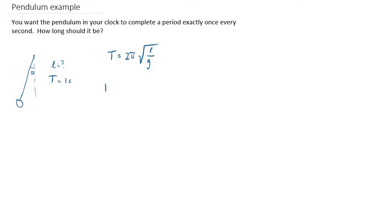So if we want the period to be one second, this has to be equal to 2π times the square root of whatever l is, divided by g. And I assume this clock is going to be on earth, so let's go with 9.81 meters per second squared.